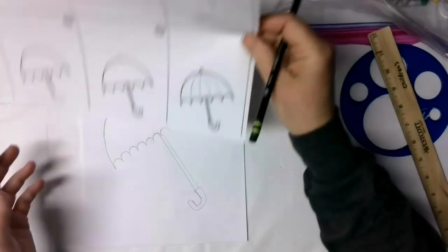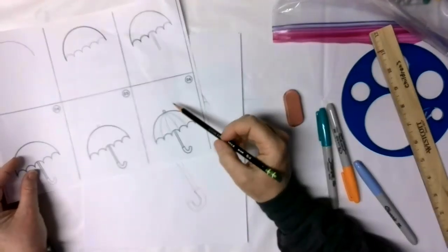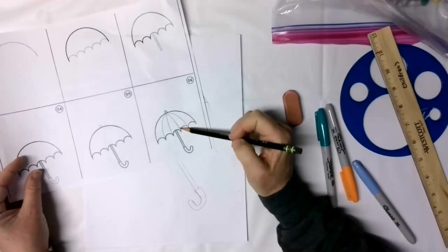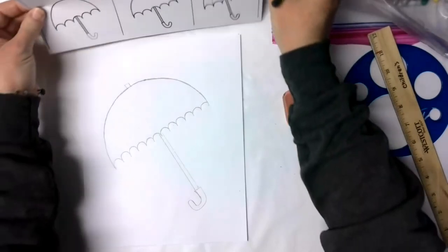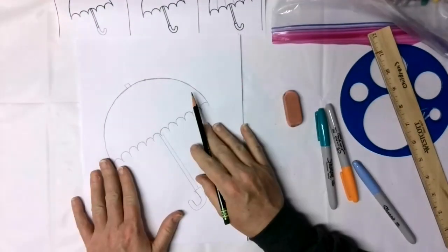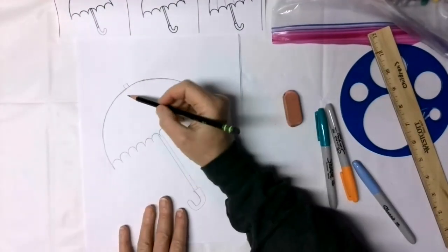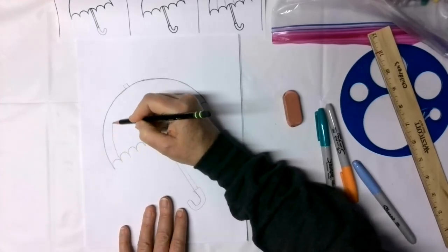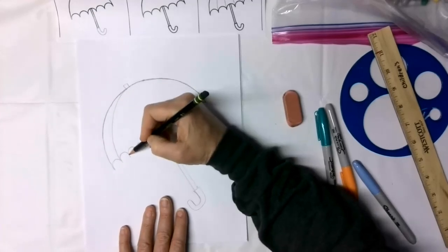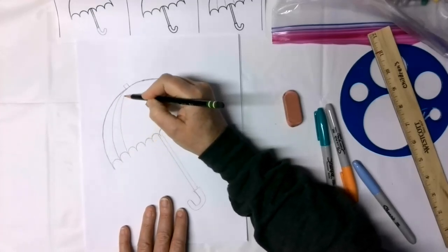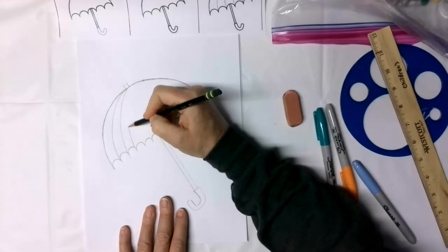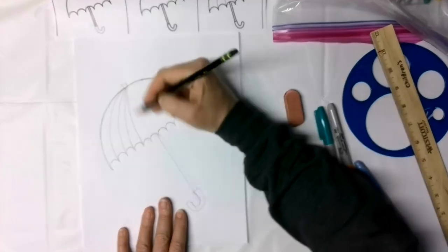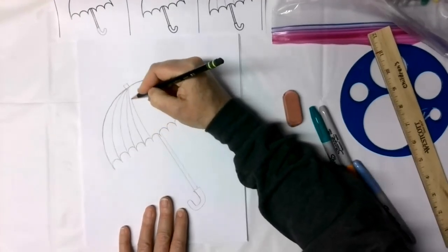So the last step on our little cheat sheet here from Pinterest shows us the lines that the umbrella has in it. Now not every umbrella has lines in it, so you could actually stop here and do any patterns you want on this. If you want a repeating pattern, you probably want to start within your humps here and draw all the way up to center.